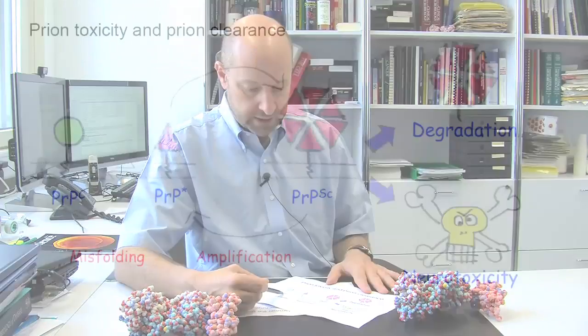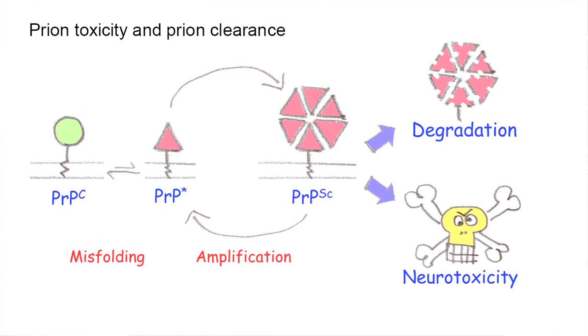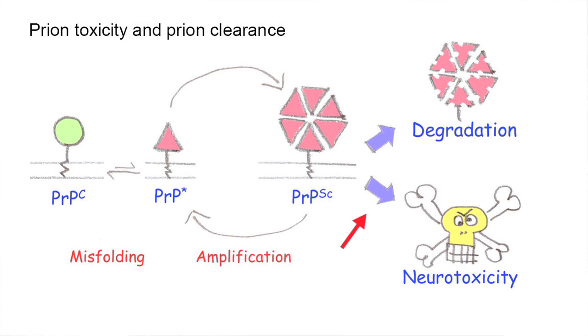Our concept of what we really want to understand in prion diseases is the following. There is a normal protein of the body called PRPC, and this protein can transform itself into a misfolded variant that we call PRP star, or PRP scrapie. This misfolded variant is what drives toxicity in prion diseases. Although these parts of the process are relatively well understood, we still have very little idea of what goes on between the formation of PRP scrapie and the actual neurotoxicity — and that is really what we are trying to understand.